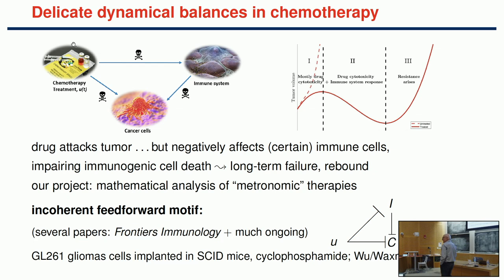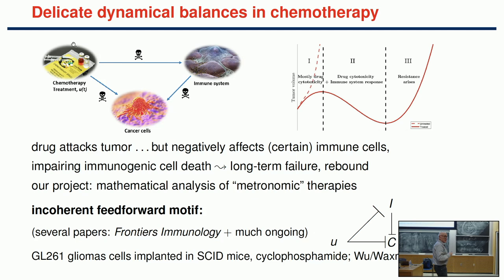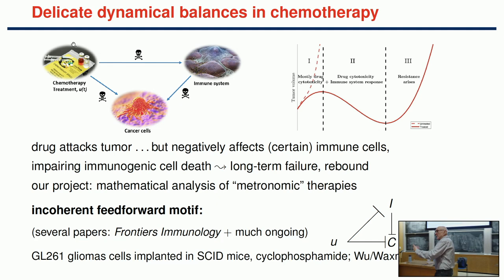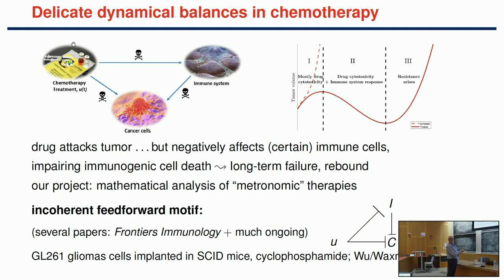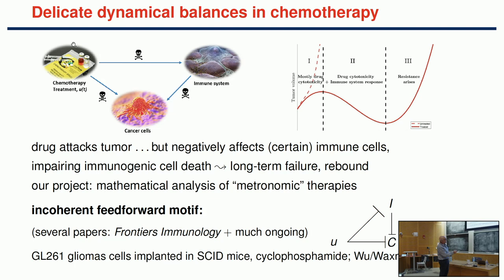Another topic I've been working on is the effect of chemotherapy when you keep in mind the immune system. When you apply a chemotherapy drug, not only do you kill the cancer, but typically you also kill some immune cells that in turn would have killed the cancer. Fast-dividing immune cells get killed. So the drug kills the cancer but also kills the immune system, which would have brought down the cancer—a negative times a negative equals a positive path, but then you have a negative direct effect. Again, this is an incoherent form.